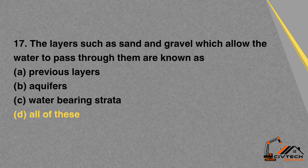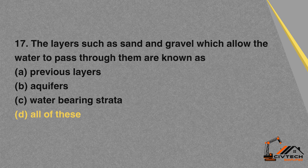MCQ 17: The layers such as sand and gravel which allow the water to pass through them are known as — A. Pervious layers. B. Aquifers. C. Water-bearing strata. D. All of these. Correct option: D. All of these.